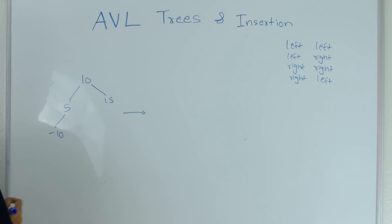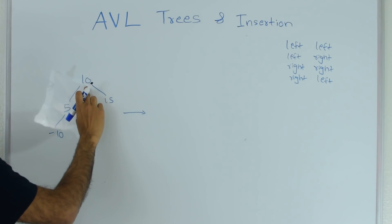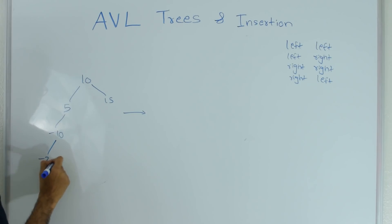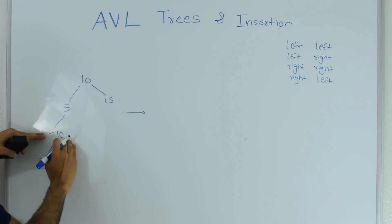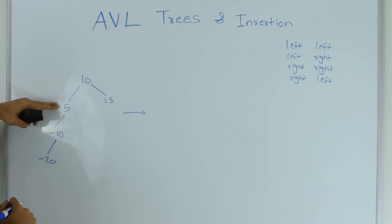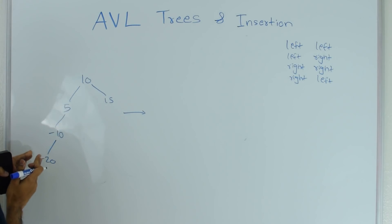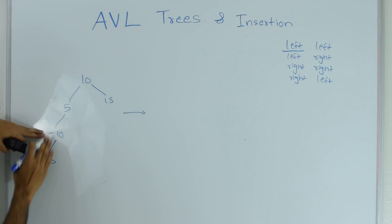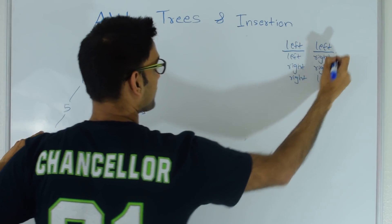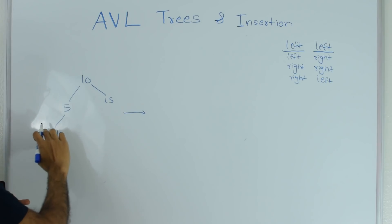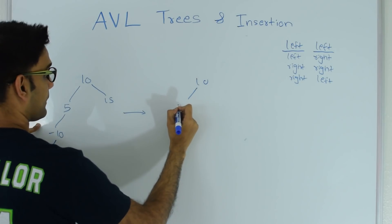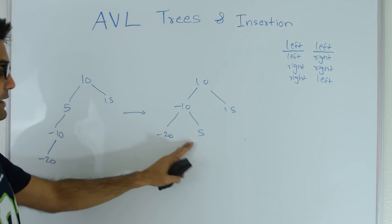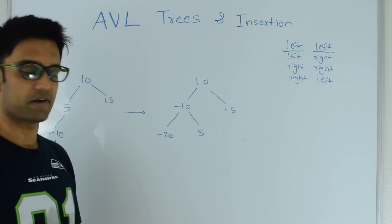This is an AVL tree. Let's say I'm trying to insert -20 into this AVL tree. So I go to 10, -20 is less than 10 so I come to 5, -20 is less than 5 so I come to -10, -20 is less than -10 so I put -20 right here. Now -20 does not violate the AVL property, -10 does not violate, but 5 violates. The height of the left subtree from 5 is greater than the right subtree — that's the first 'left'. For 5's left child (-10), the height of the left subtree is also greater than the right subtree — that's the second 'left'. Since we have a left-left case, all we have to do is a right rotation at -10. So this becomes 10, -10, 15, 5 and -20. This tree is a BST and does not violate AVL properties, so it is an AVL tree.